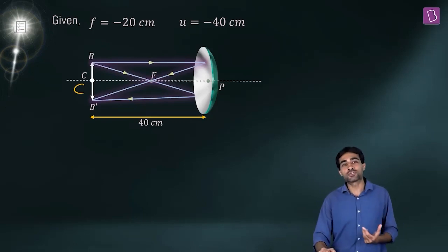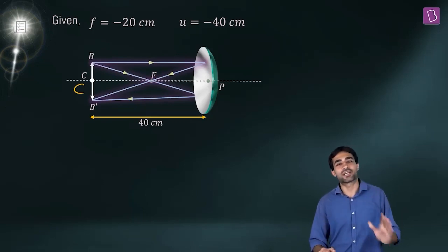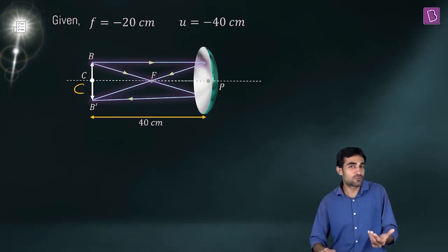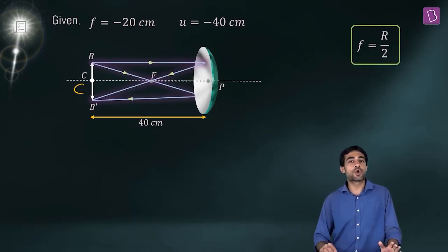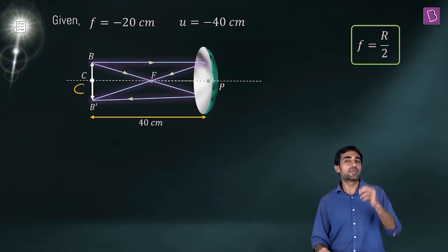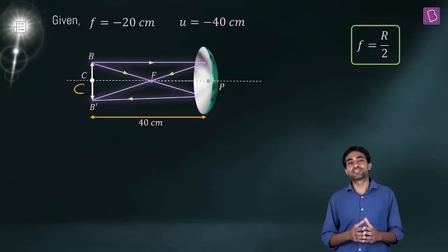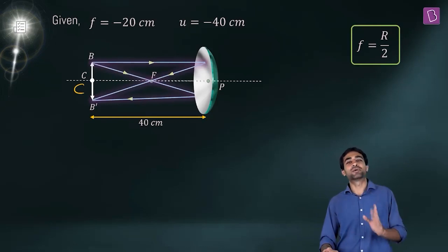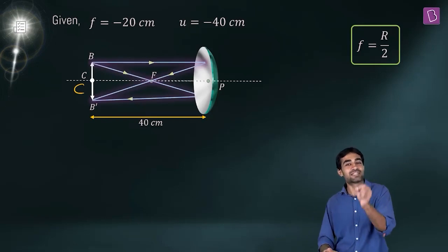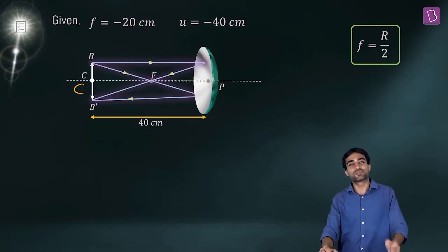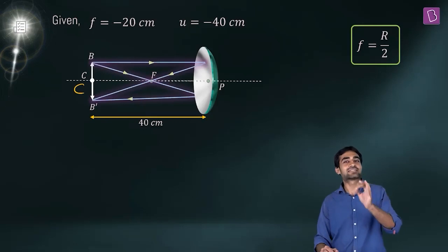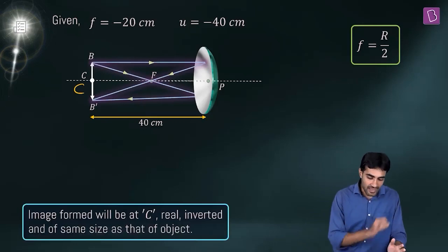So the image is formed at the center of curvature — it is real, inverted, and of the same size as the object. Using f = R/2, radius of curvature R = 2 × 20 = 40 centimeters, which is exactly where the object is placed. Therefore the image is real, inverted, and of the same size as the object.